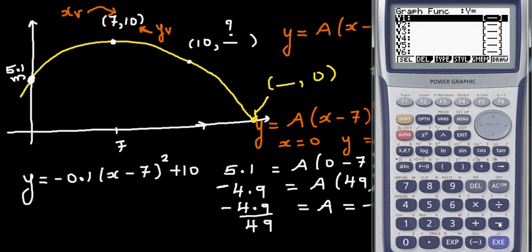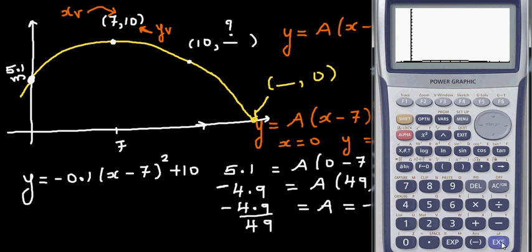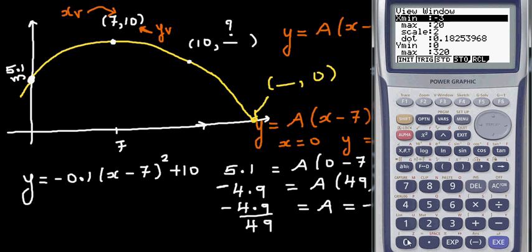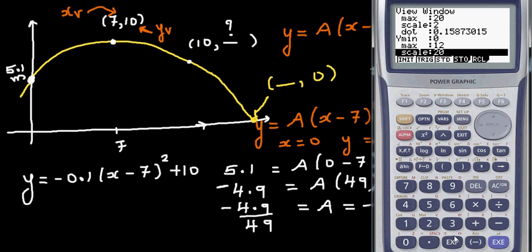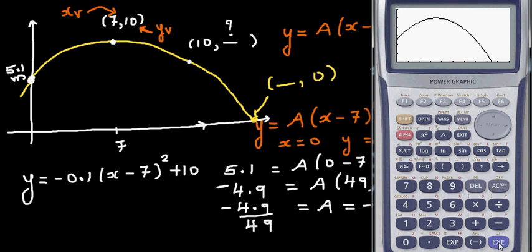So let's type in this equation: minus 0.1 bracket x minus 7 squared plus 10. And we need to change the scale. The scale, I'll go from 0 to 20 on x, and on y I'll go from 0 to 12, scale of 2. Here's the graph. We need to confirm y-intercept is 5.1 and maximum is 7, 10.